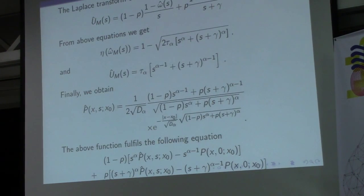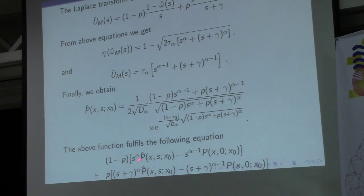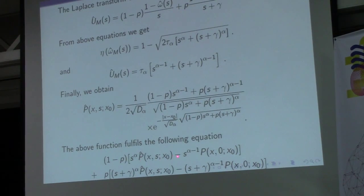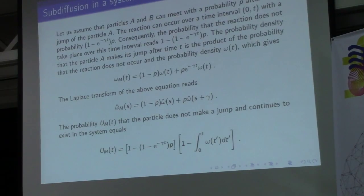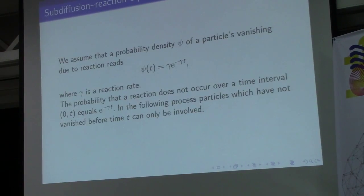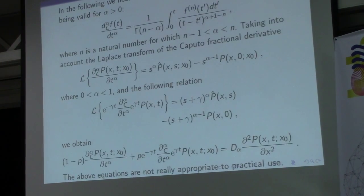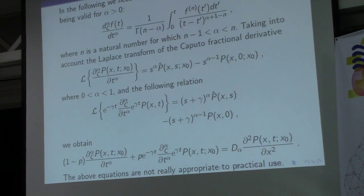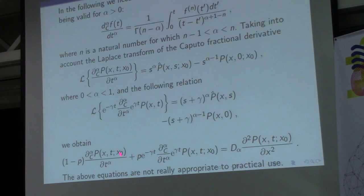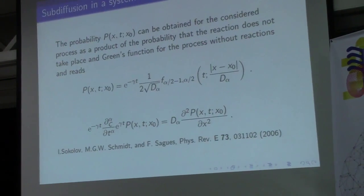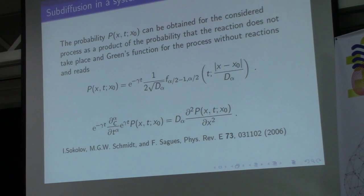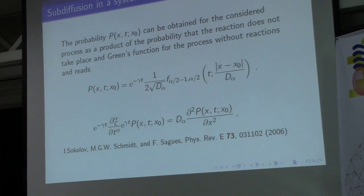Note that the presence of the fractional derivative is due to the specific form of the Laplace transform of these equations. In the previous equation, when we treat this quantity as alpha multiplied by P, the inverse Laplace transform provides the fractional derivative. Let us now consider two cases of the previous equations.